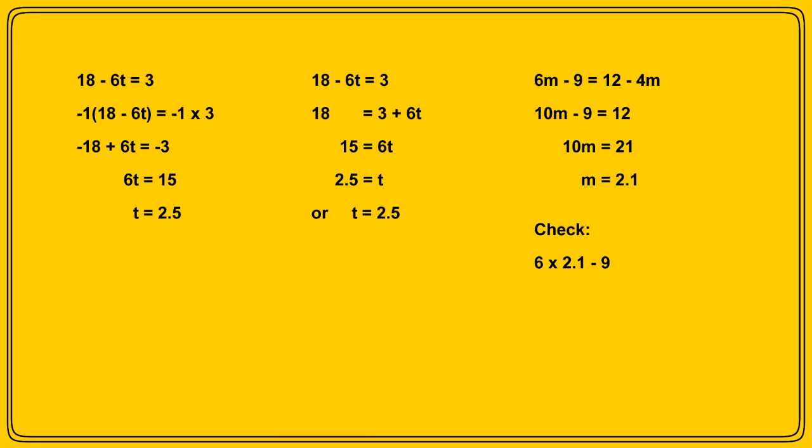Putting m equals 2.1 into 6m subtract 9 gives 6 times 2.1, which is 12 subtract 9, and that's 3.6. Putting m is 2.1 into the other side of the equation, 12 subtract 4m, gives 12 subtract 4 times 2.1, which is 12 subtract 8.4, and that too comes to 3.6. So the right hand side of the equation equals the left hand side, and that gives us a lot of confidence in our answer.